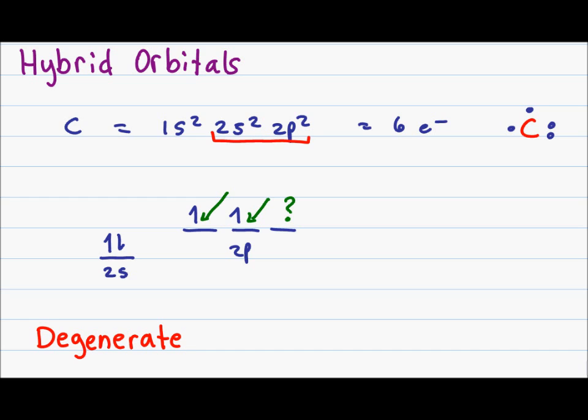So where are the 4 bonds that carbon is so famous for? To answer this, let's first define degenerate orbital. A degenerate orbital refers to electrons in an orbital that all have the same energy.